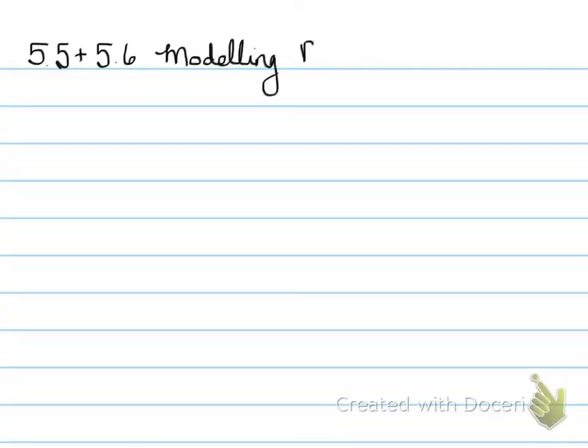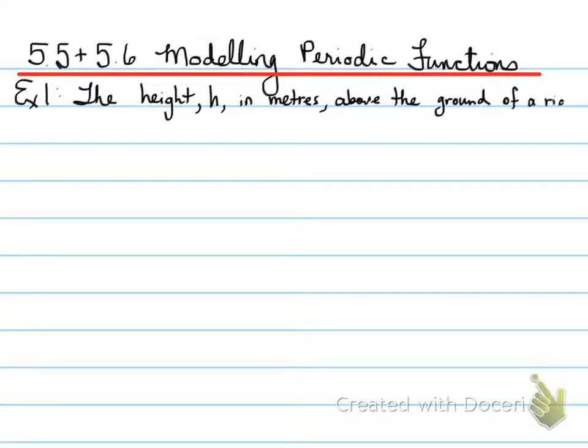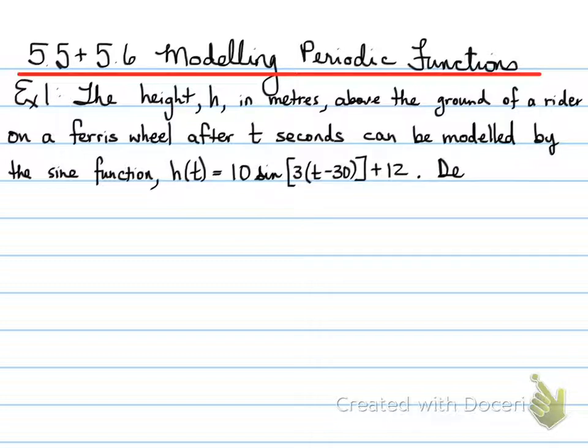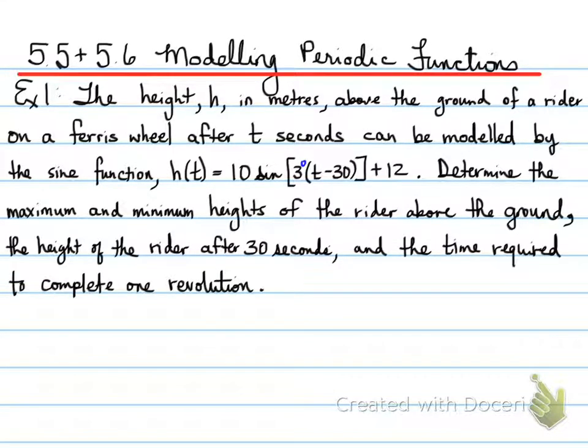5.5 and 5.6 Modeling Periodic Functions. Example 1: The height h in meters above the ground of a rider on a ferris wheel after t seconds can be modeled by the sine function h(t) = 10sin[3(t-30)] + 12. Determine the maximum and minimum heights of the rider above the ground, the height of the rider after 30 seconds, and the time required to complete one revolution.